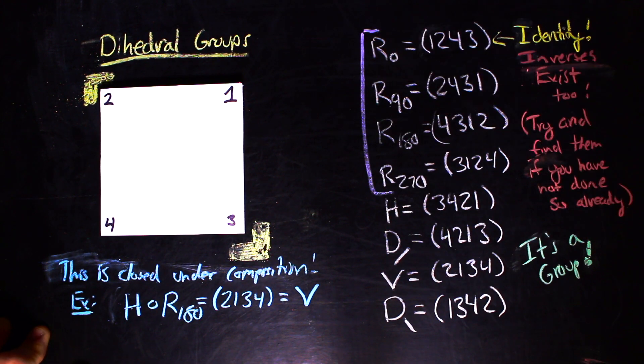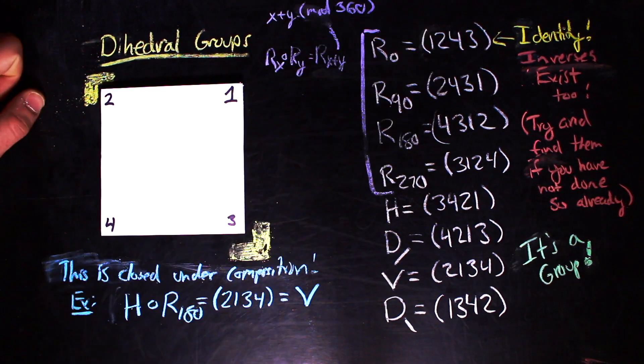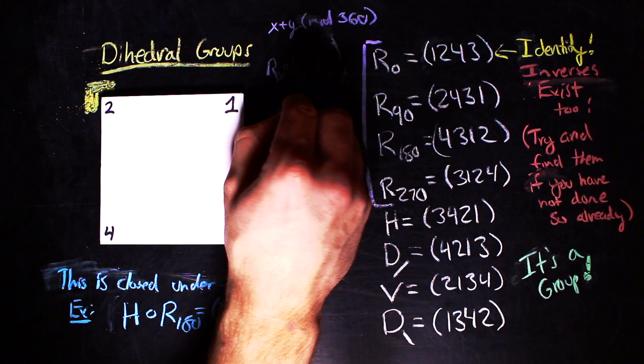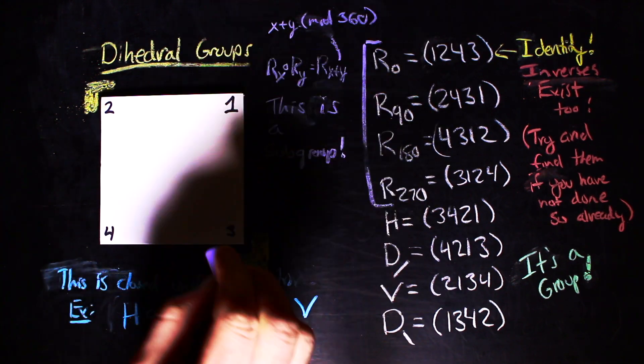if you focus on the rotations of this group, you'll notice that with respect to the same composition, rotations only give you rotations. So we have a smaller group within a larger group. A group that is a subset of another group with the same associative binary operation is called a subgroup.